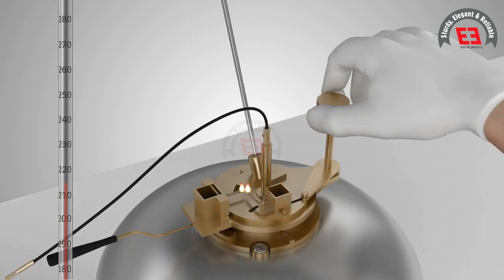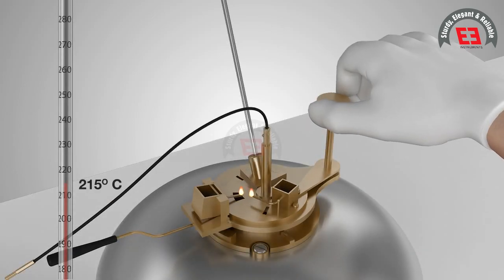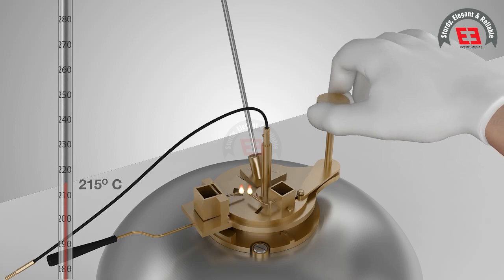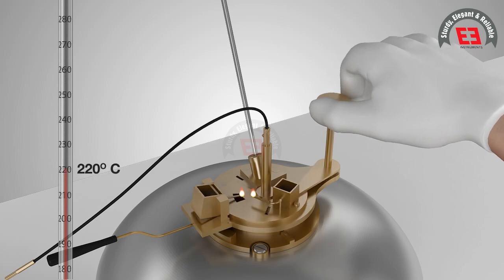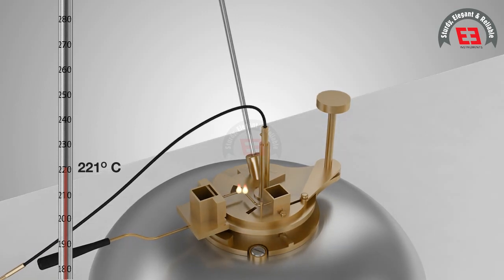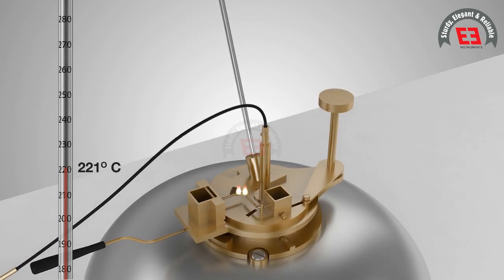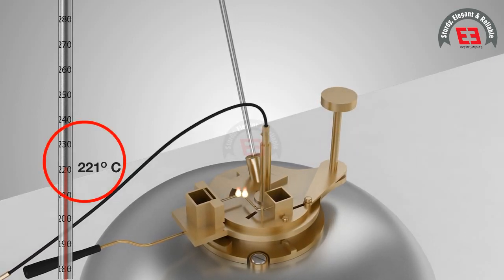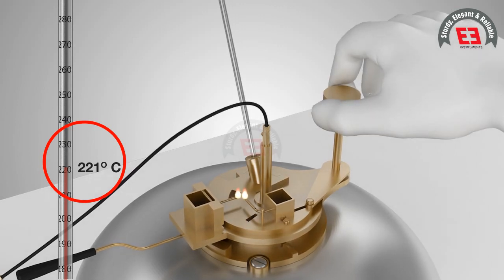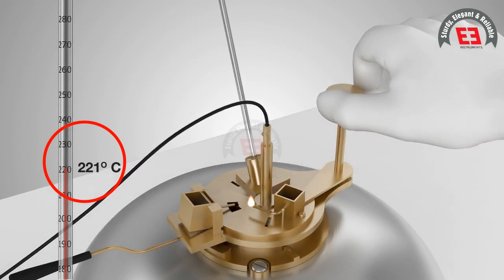Thereafter, the test flame is applied at the rise of every 1 to 3 degrees Celsius interval. The flash point is taken as the temperature read on the thermometer at the time of the flame application that causes a distinct flash in the interior of the cup.